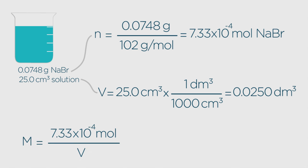Finally, 7.33 times 10 to the minus 4 divided by 0.0250 equals 2.93 times 10 to the minus 2 moles per decimetres cubed. Very well done if you got that one right.